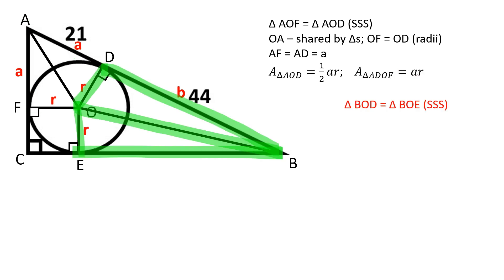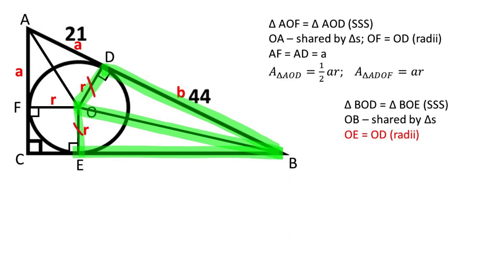Triangles BOD and BOE are congruent by three congruent sides. OB is shared by both triangles. OE and OD are congruent as radii of the same circle.